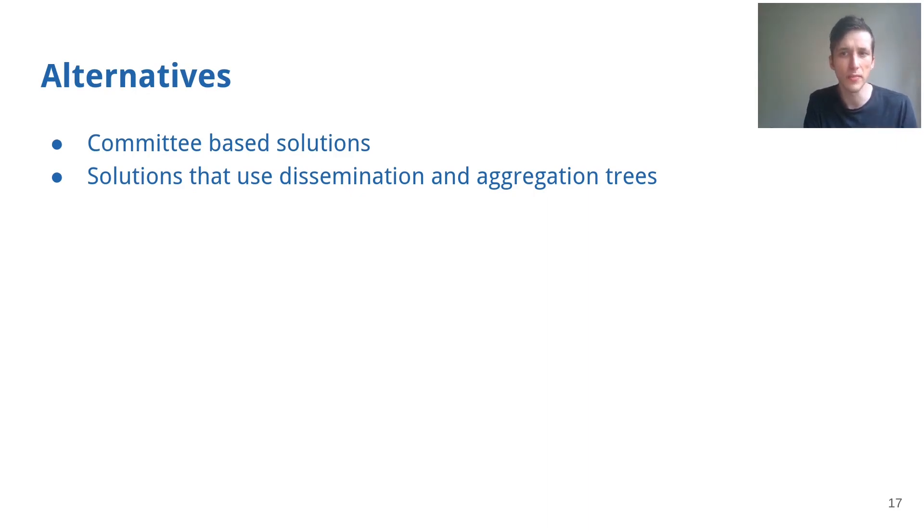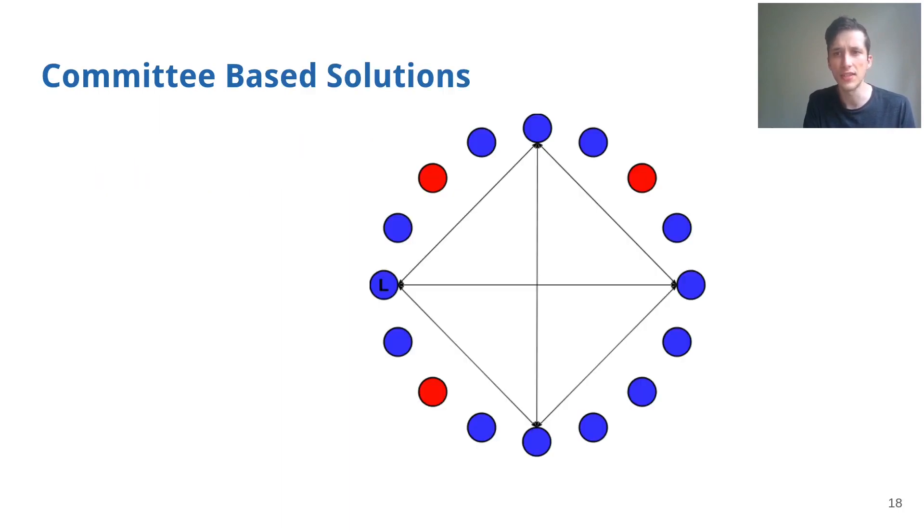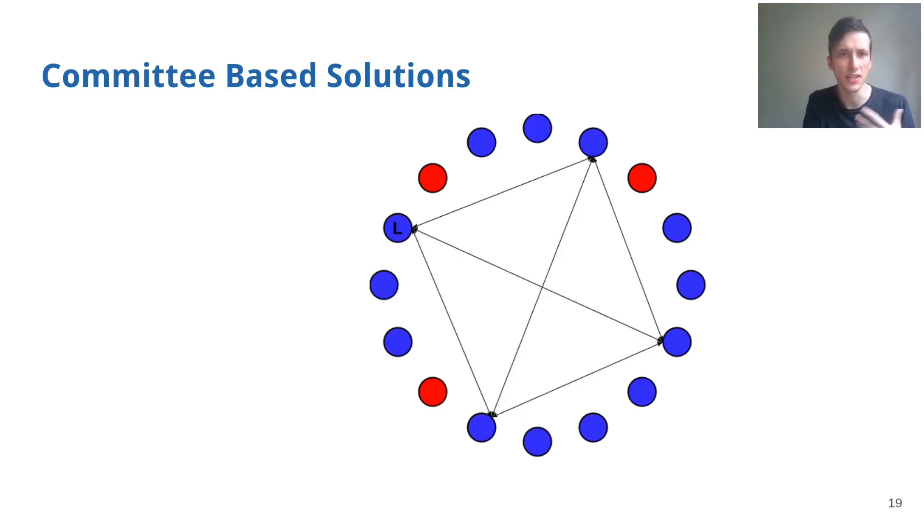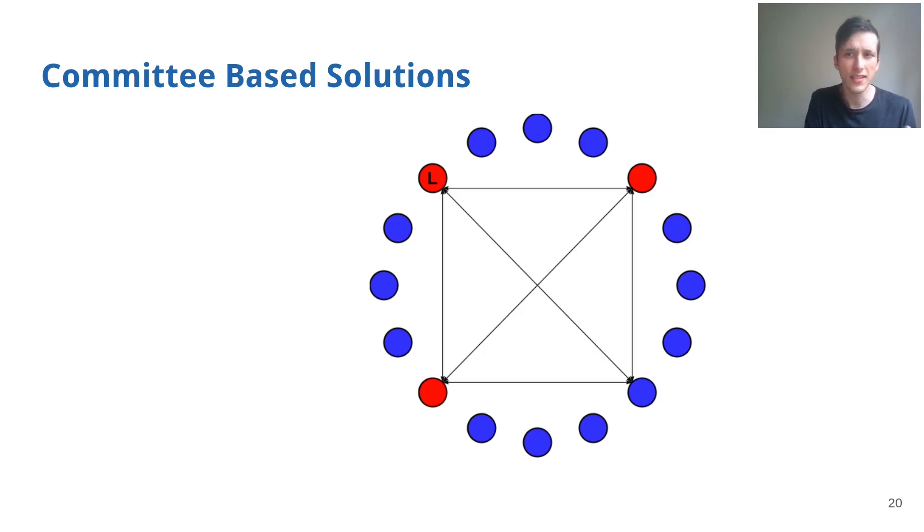Most notably solutions based on committees and solutions that use dissemination and aggregation trees. Committees are really straightforward. Instead of requiring all processes to participate in consensus, a different subset of processes is selected each round. However, there is a certain possibility to eventually reach a committee with a majority of faulty nodes, and consensus will fail. Thus, these approaches either consider lower resilience or do not provide deterministic safety.